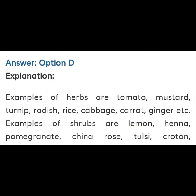Your right answer is again option D. Explanation: Examples of herbs are tomato, mustard, turnip, radish, rice, cabbage, carrot, ginger, etc. Examples of shrubs are lemon, henna, pomegranate, china rose, tulsi, croton.